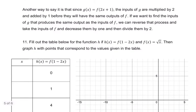Another way to say it is that since g of x equals f of 2x plus 1, the inputs of g are multiplied by 2 and added by 1 before they will have the same outputs of f. So you have to do those two things. You have to double it and then add 1. So if you want to find the inputs of g that produce the same outputs of f, you can reverse that process. So you have to take x, double, and add 1. But then I have to go backwards. You have to subtract 1 and then divide it by 2. And so it's always about unraveling or solving for x inside the inputs there.